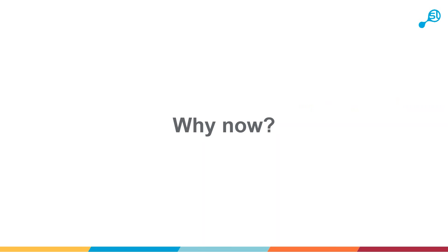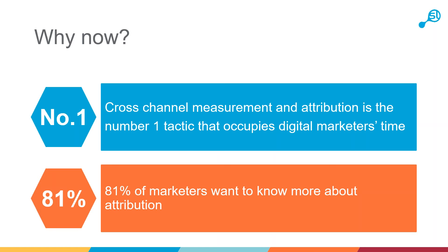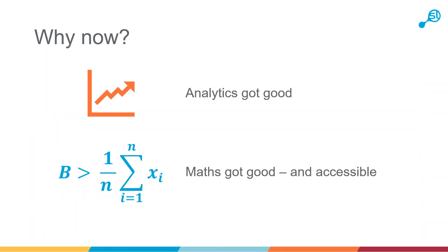Why are we talking about this now? Why are we getting excited about this now? Cross-channel measurement and attribution is the number one tactic that occupies digital marketers' time — this is from a recent survey by Google. Lots of people are interested in how these channels interact, and 81% of marketers want to know more about attribution, which is presumably why you're attending this webinar.